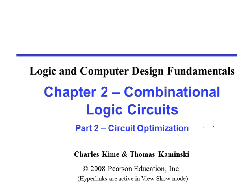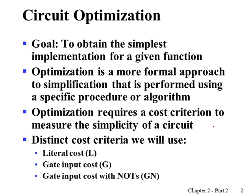This is the second part of Chapter 2. We are mainly going to deal with circuit optimization. The goal of circuit optimization is to obtain the simplest implementation for a given function, which gives us the minimal cost hardware implementation.